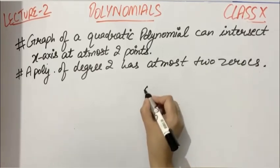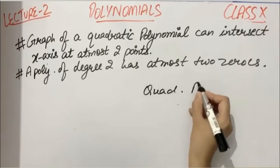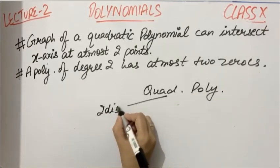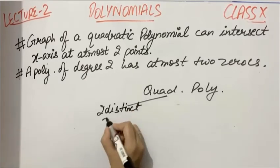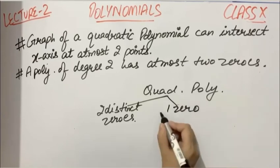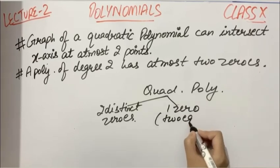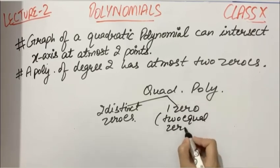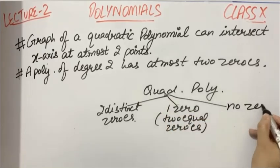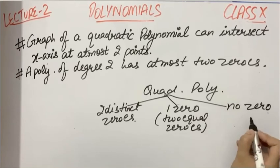Or I can say a quadratic polynomial can have either two distinct zeros, when the graph intersects at two distinct points, or it can have one zero, or I can say two equal zeros, because the points were coinciding in the graph, or it can have no zero, when the graph doesn't intersect at any point.